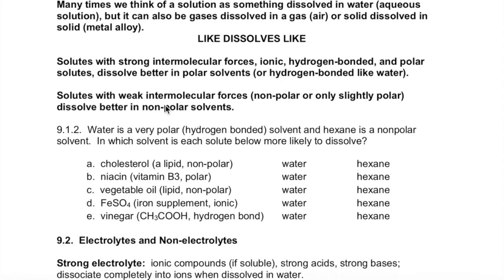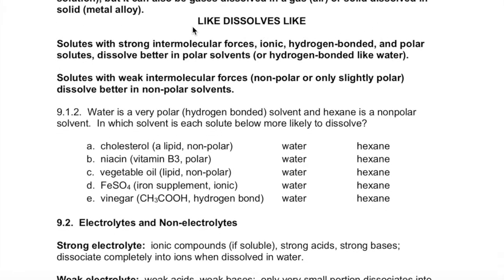So what determines whether something will dissolve or not? Back in chapter six, we looked at things that were nonpolar and how those tend to have poor or low solubility in water. To dissolve, to mix together, the intermolecular forces in the mixture have to be stronger than the intermolecular forces either within the solute or within the solvent. So if a solute has strong intermolecular forces — like if it's ionic, hydrogen bonded, or fairly polar — it's going to take a very good interaction with the solvent to break that apart.